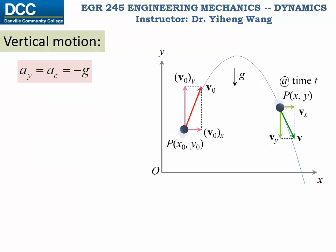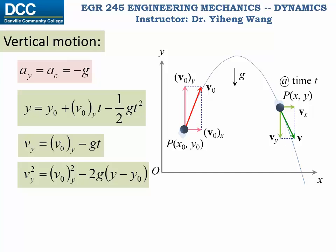For the vertical motion, since the acceleration is a constant negative g, we substitute ac equals to negative g into the equations for rectilinear motion with constant accelerations and get this set of equations.